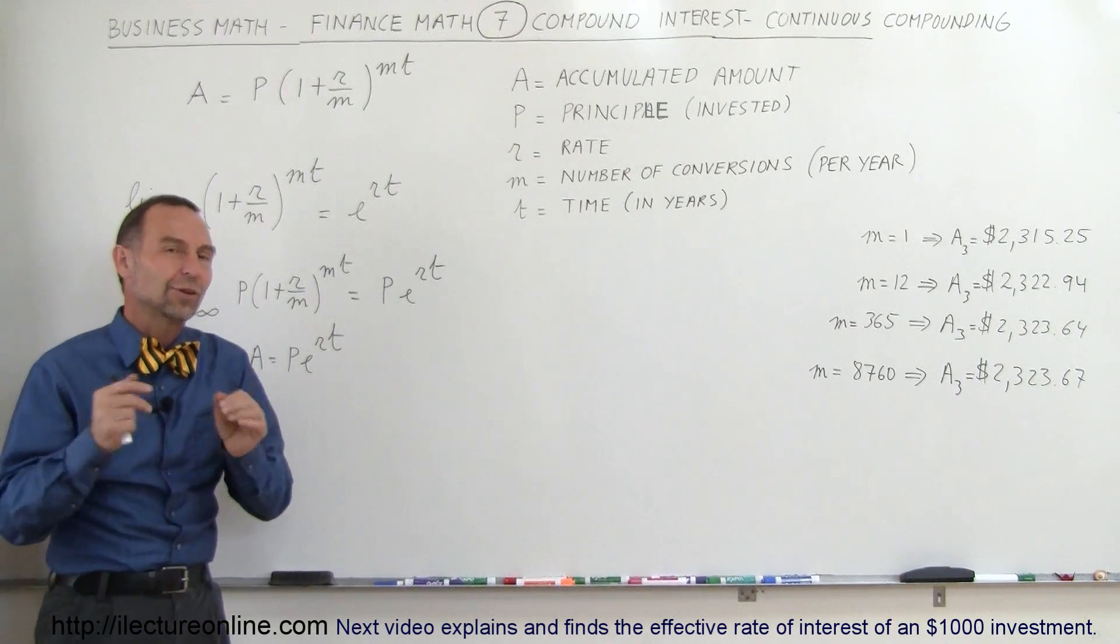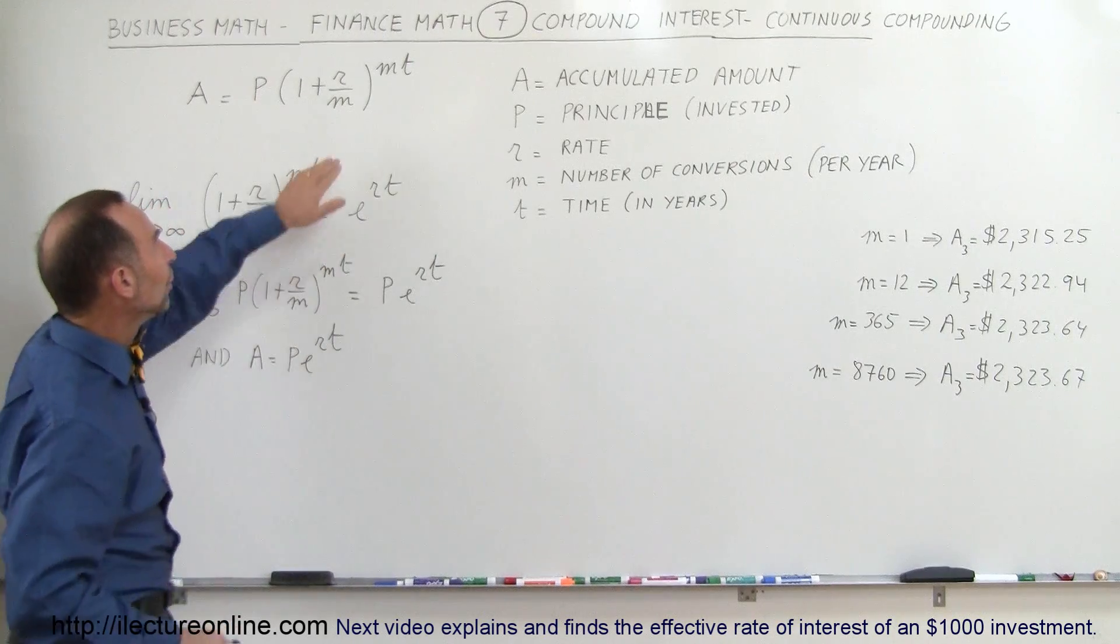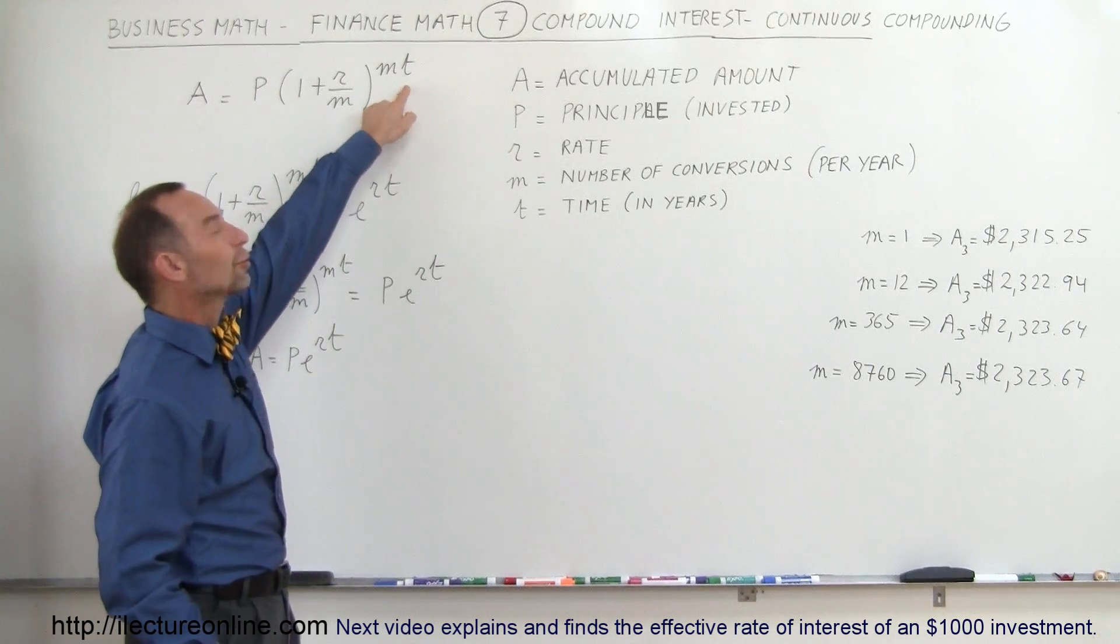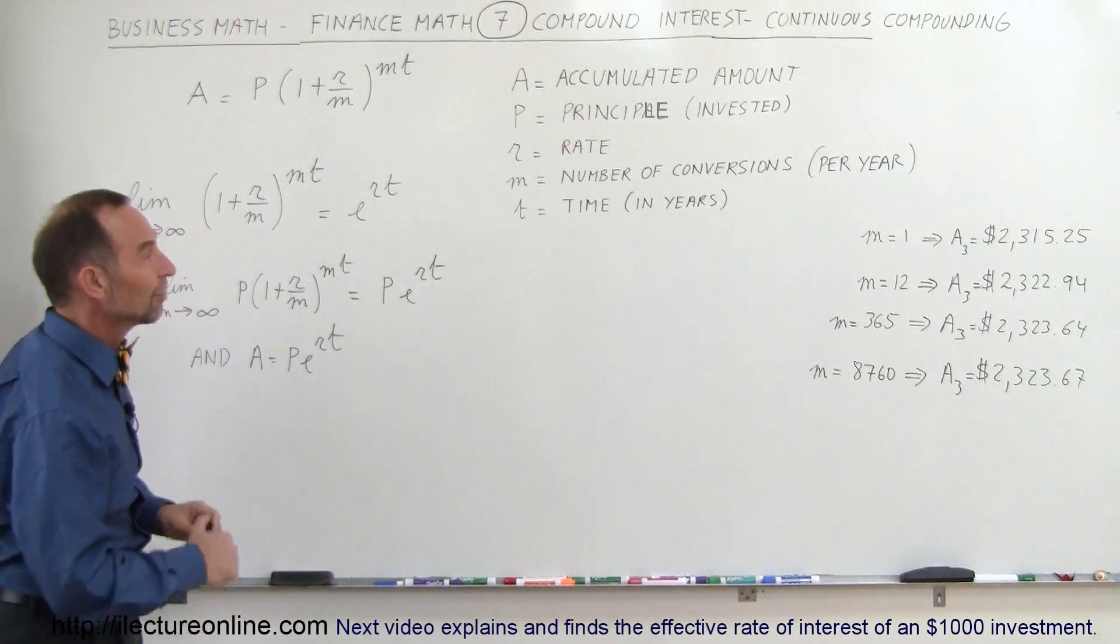So that's called number of conversions. M would be 365 because there's 365 days in a year, raised to the M times T power. T of course is the number of years in which money is invested.